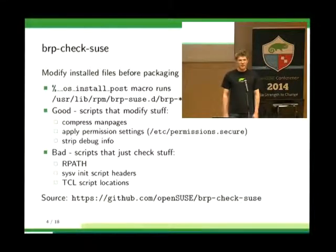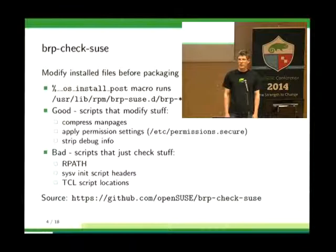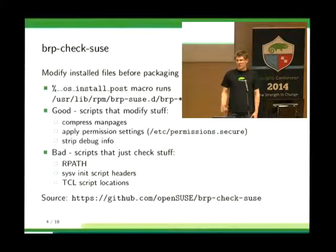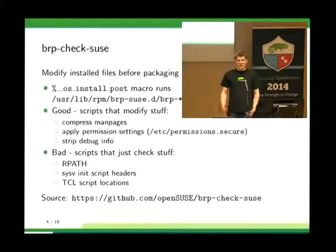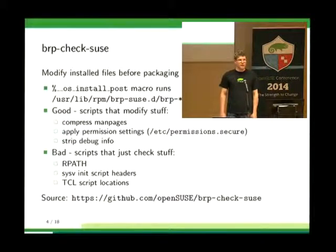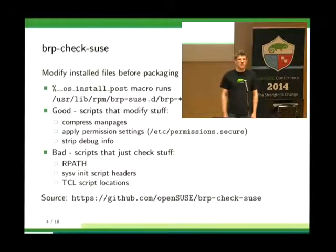There are also bad examples — legacy scripts that are there only because in former times it was the only place to put such things. These are scripts that just check things without actually modifying files or the directory hierarchy. For example, one checks that you have a proper RPATH set in your libraries or binaries — that should be moved to RPM-Lint. There's also a script checking init script headers, which is nowadays useless and also the wrong place. And a quite old script that checks the location of TCL files.